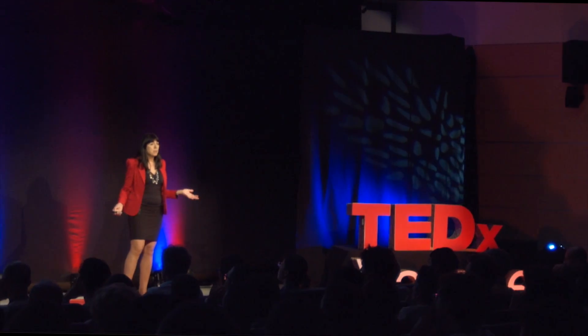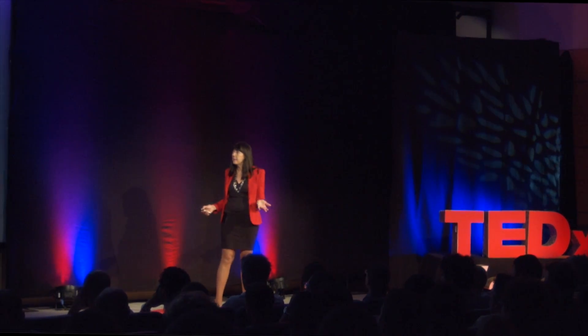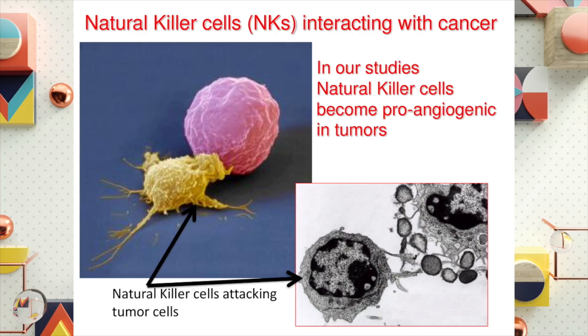We came to the idea with Michael Sporn — one American investigator very well known for inventing prevention — to use the microenvironment of the tumor as a target to help our body fight the tumors from inside. We also discovered with our team, in particular with a young investigator Antonino Bruno, and with my husband Douglas Noonan, professor at Insubria, University of Varese, that there are certain cells called natural killers. We discovered that in tumors some of these cells are polarized — they become helpers of tumor growth, they don't kill the tumor cells anymore, but they feed them and make them grow faster. So these cells we can try to re-educate to be good guys and help fight the tumor.